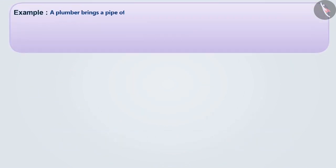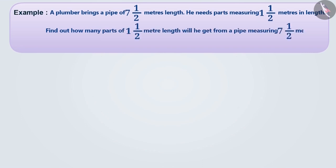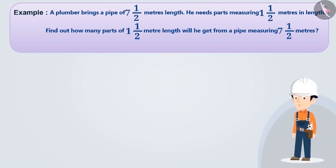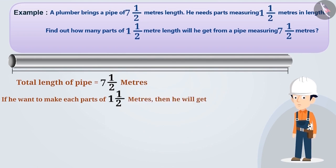Next example: A plumber brings a pipe of 7.5 metres in length. He needs pipe parts measuring 1.5 metres in length. Find out how many parts of 1.5 metre length will he get from a pipe of 7.5 metres. The total length of the pipe is 7.5 metres. If he wants to make parts measuring 1.5 metres, then he will get 7.5 divided by 1.5 parts.